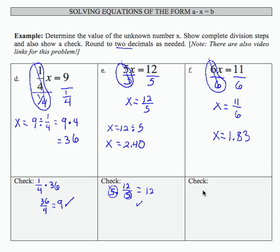If I check, especially when I had to round a result, I'm going to always use the fraction to check. 6 times 11 over 6, I have my common factor of 6. Does that equal 11? Yes, it does. So we have our correct result of 11 over 6 or 1.83.